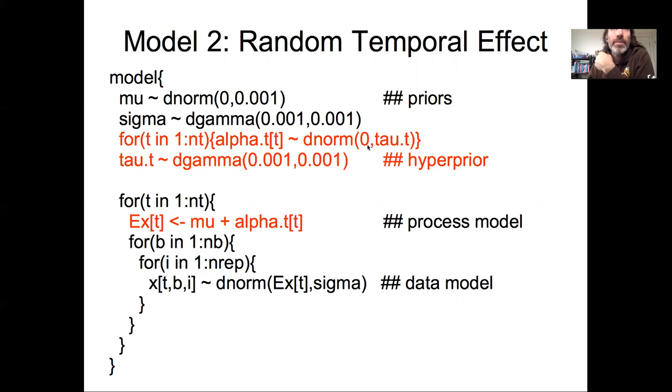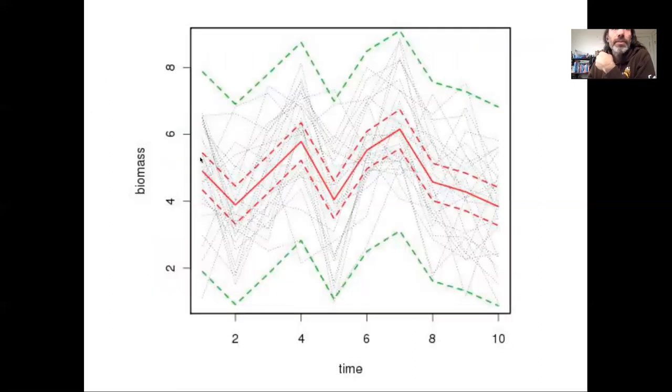When we fit this model we now have comps intervals, means and comps intervals that are varying from year to year because we have not just an overall mean but we have an estimate of year-to-year variability. Because we're now fitting a mean and 10 year effects, our comps intervals are wider. Our predictive intervals are actually fairly similar but now show this year-to-year variability that kind of matches the years that seem to be high years and the years that seem to be low years.